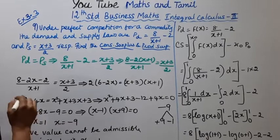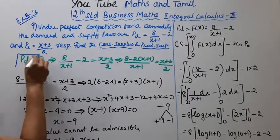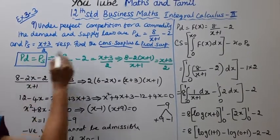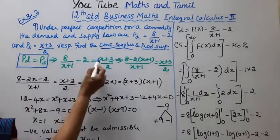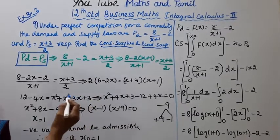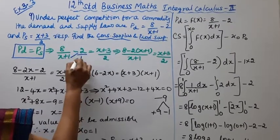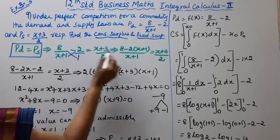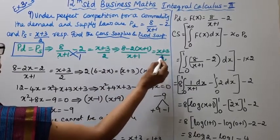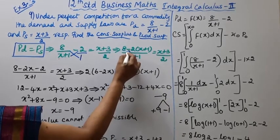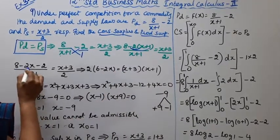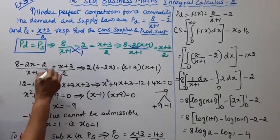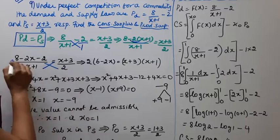Setting demand equal to supply: 8 by (x plus 1) minus 2 equals (x plus 3) by 2. Cross multiply: x plus 1 into (8 minus 2(x plus 1)) equals (x plus 3) by 2. Simplifying: 8 minus 2x minus 2 divided by (x plus 1) equal to (x plus 3) by 2. Now cross multiply.